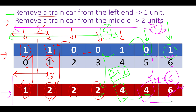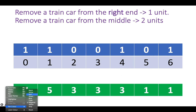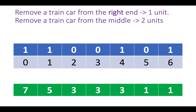Now we do the same thing in reverse, starting from the right end. Removal of a car from the right end takes one unit; removal from the middle takes two units. The formula becomes n minus i instead of i plus 1.